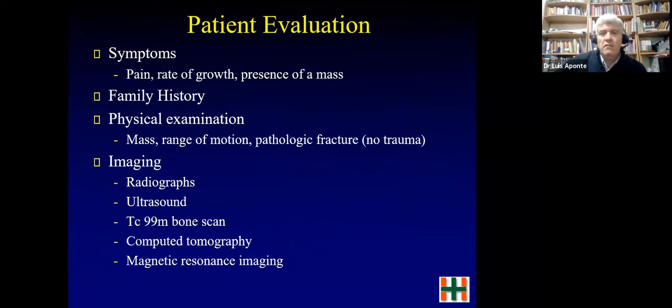Clinical evaluation is very important, including the duration, symptoms, pain, and rate of growth. The presence of a mass, family history of neurofibromatosis or osteochondromatosis, and physical examination findings such as mass characteristics and range of motion are all important. We must also focus on whether there is a pathologic fracture without trauma association.